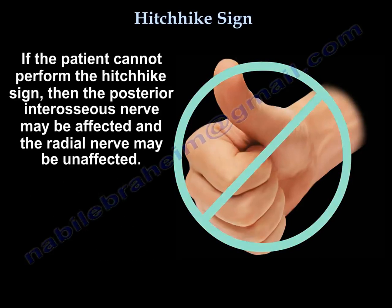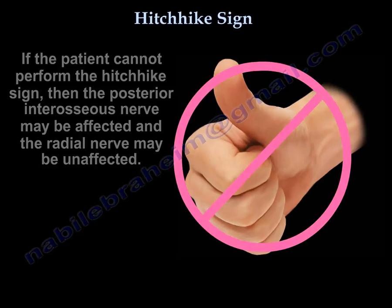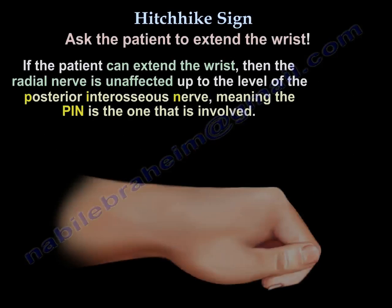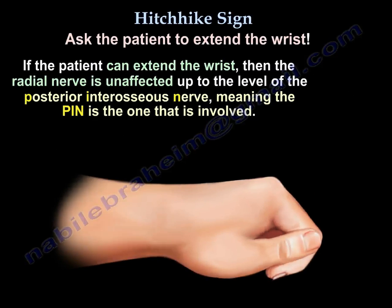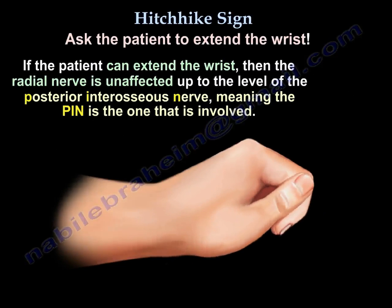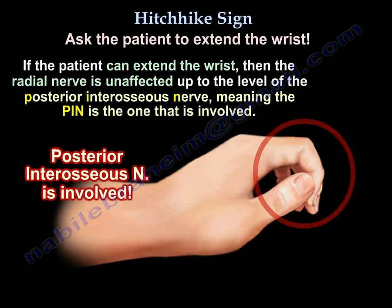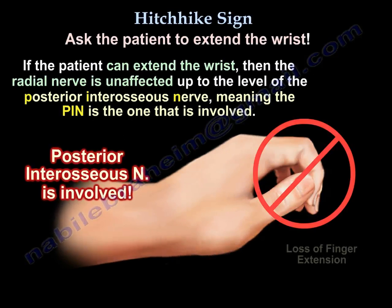Then ask the patient to extend the wrist. If they can extend the wrist, then the radial nerve is intact up to the level of the posterior interosseous nerve, and it is the posterior interosseous nerve that is involved.